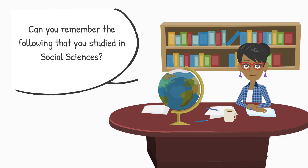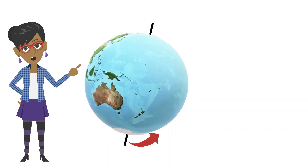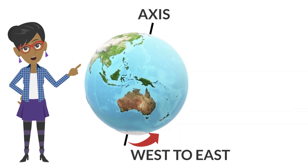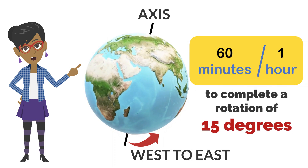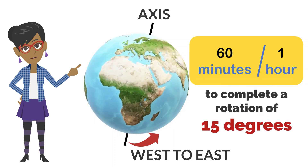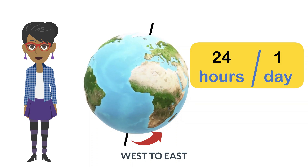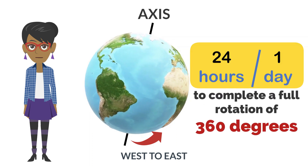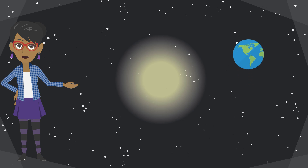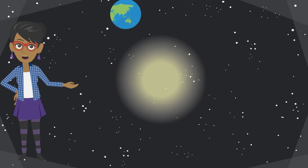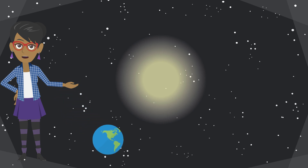Can you remember the following that you studied in social sciences? The Earth continually rotates on its axis from west to east. It takes the Earth 60 minutes, or one hour, to complete a rotation of 15 degrees. It takes the Earth 24 hours, or one day, to complete a full rotation of 360 degrees. At the same time that the Earth rotates on its own axis, it also moves or revolves around the Sun.